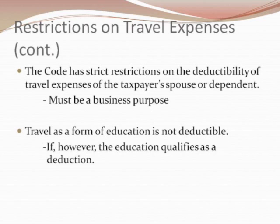The code has strict restrictions on the deductibility of travel expenses for a taxpayer's spouse or dependent — they must serve some sort of business purpose. Additionally, travel as a form of education is not deductible. For instance, if a French teacher travels to France to maintain general familiarity with the language and culture, no travel expense deduction would be allowed. However, if a French teacher is also a scholar of French literature and the travel supports specific research that cannot be done anywhere else, then the travel costs are deductible, assuming other requirements for deducting education expenses are met.